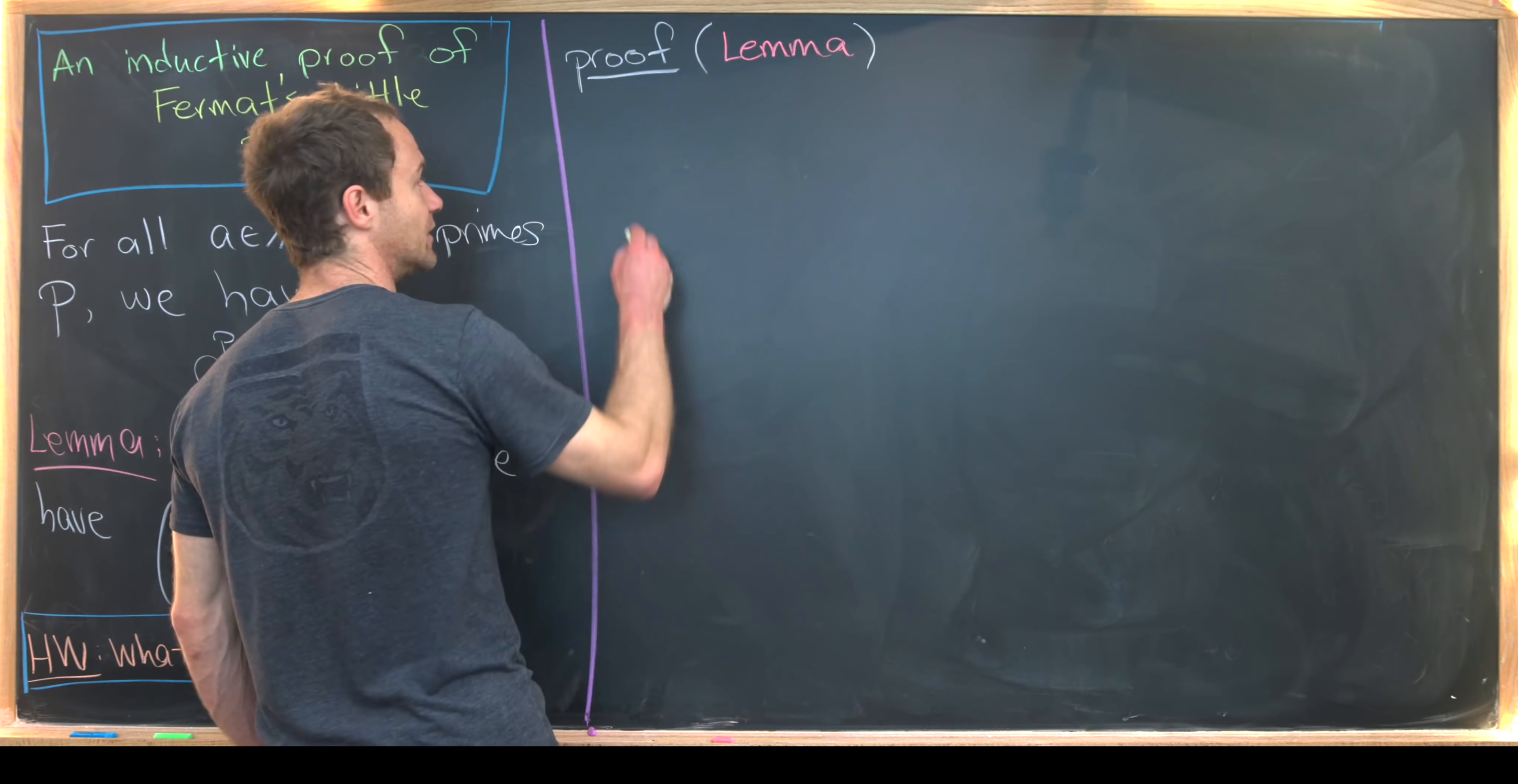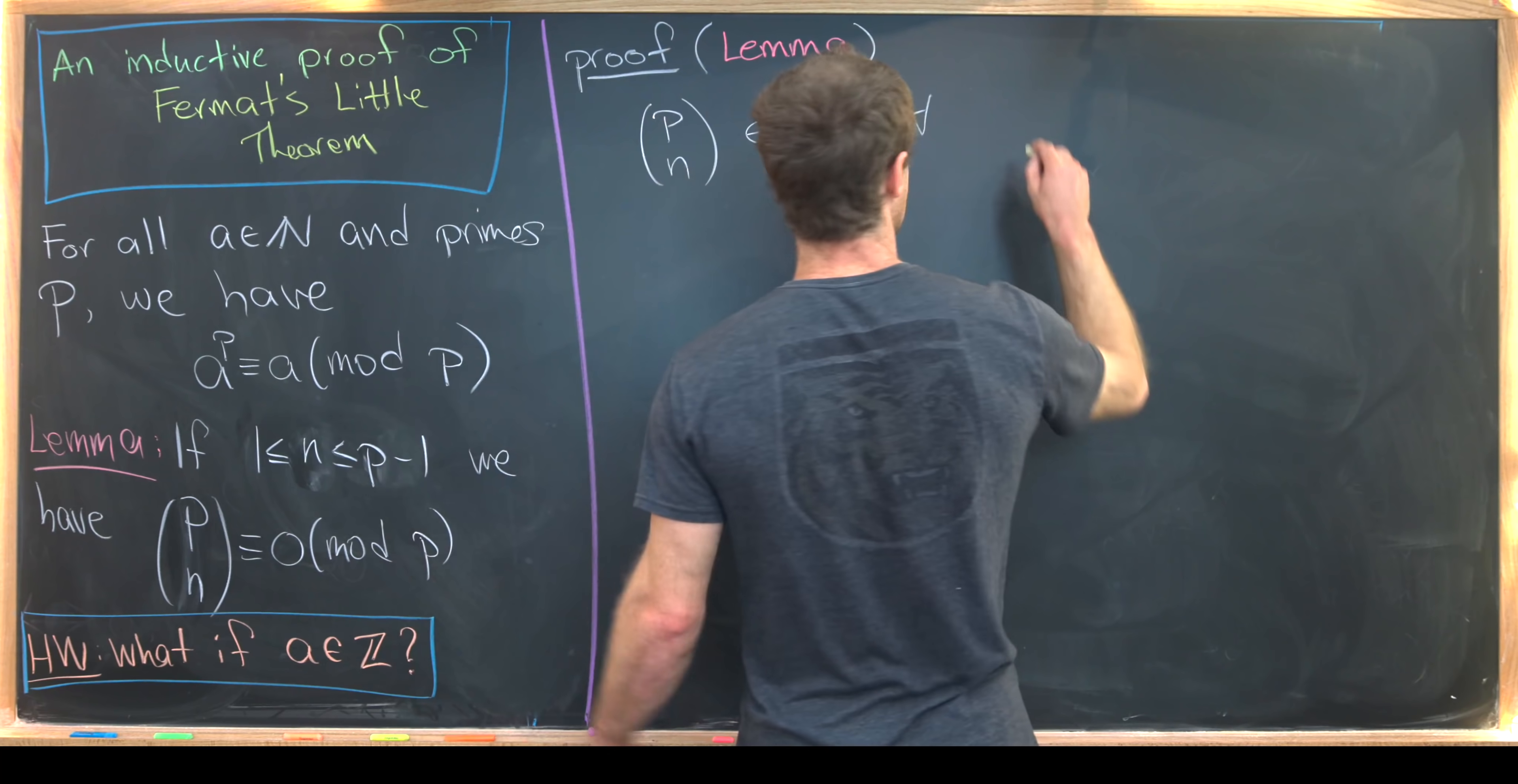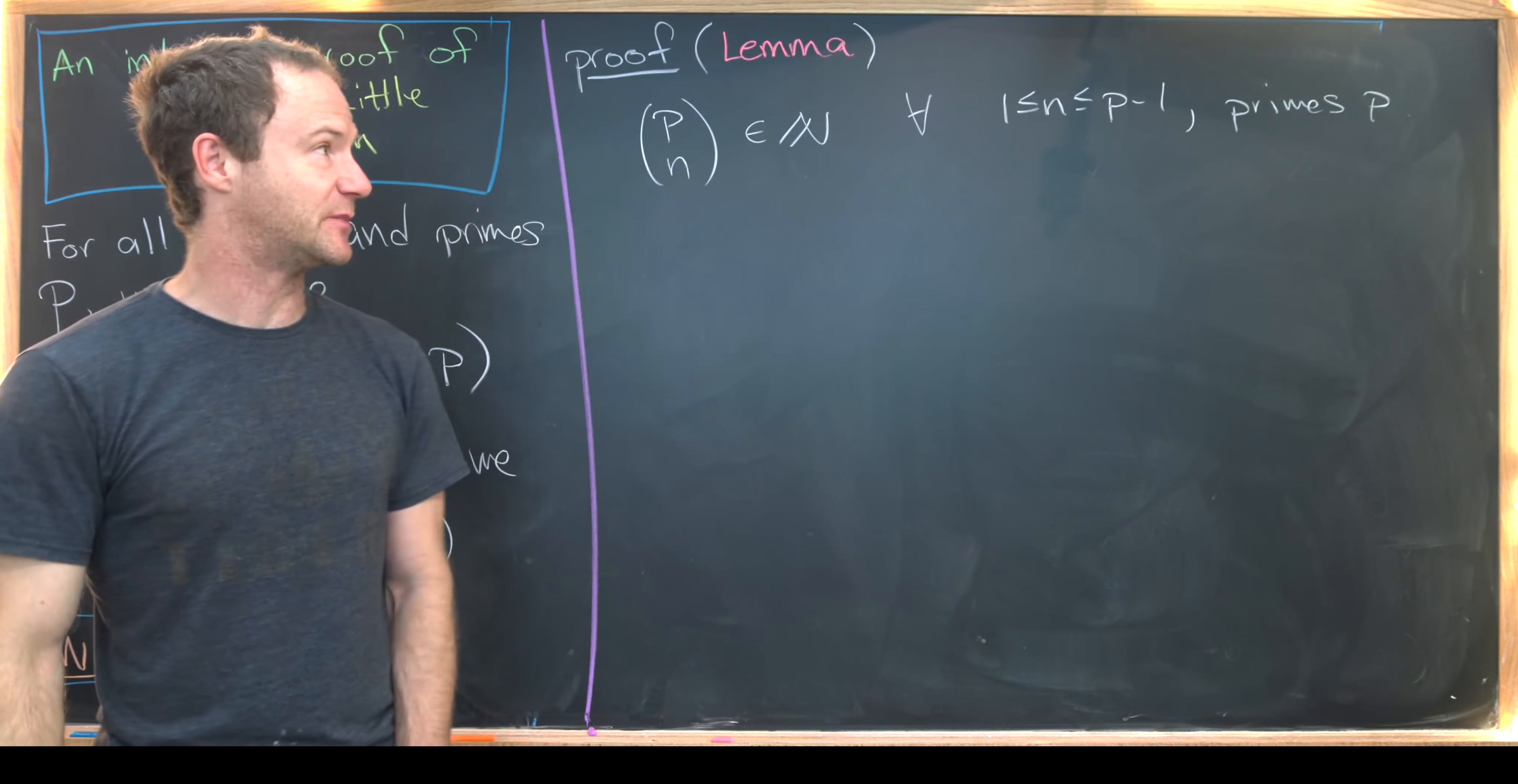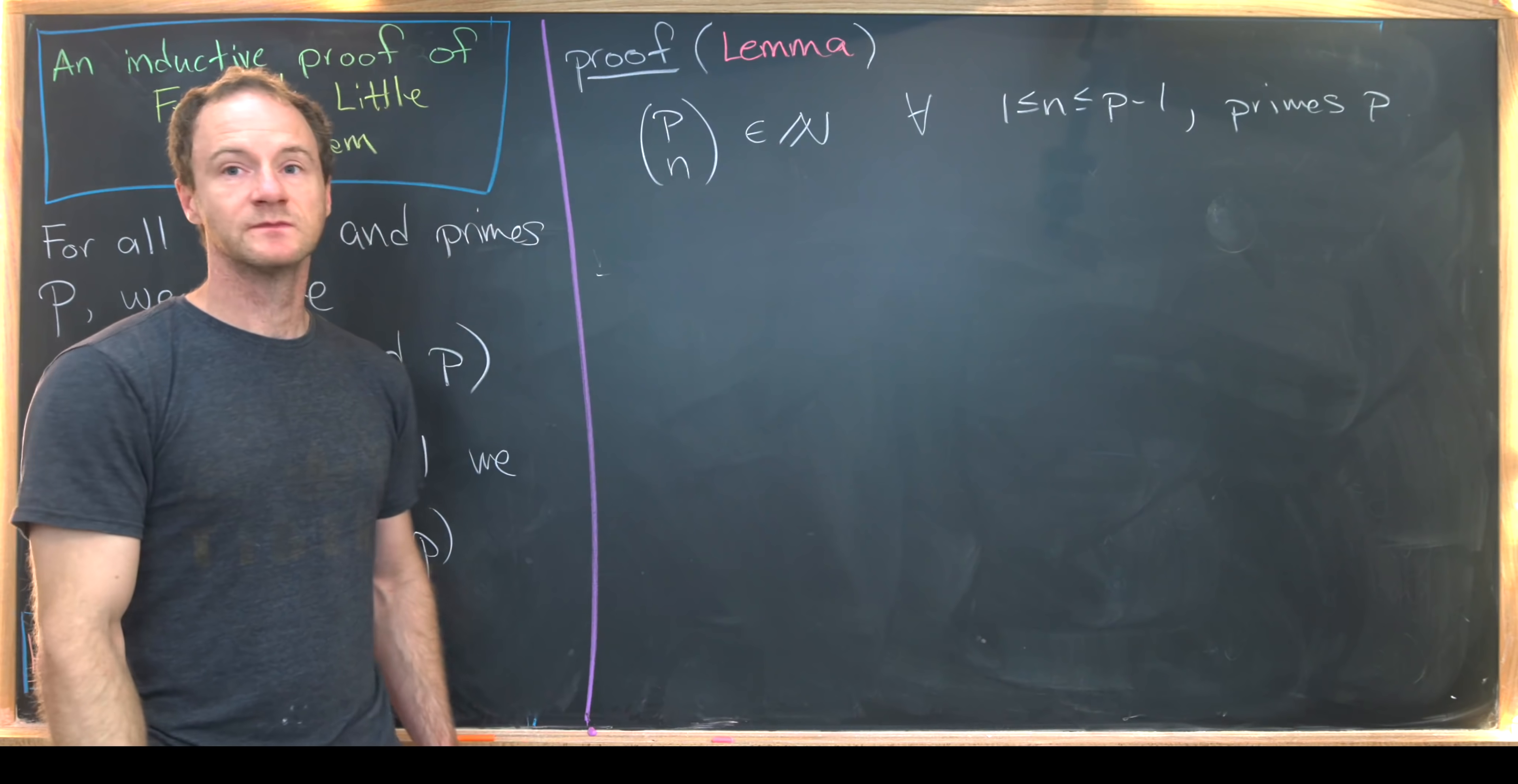So I first want to notice that P choose N is going to be a natural number for all N in the given region and for all primes P. Obviously P doesn't have to be a prime here for this to be a natural number, but P does have to be a prime in order for this to hold.